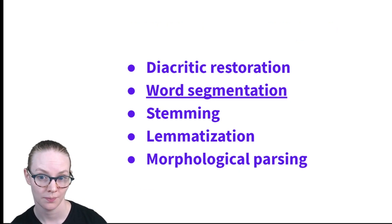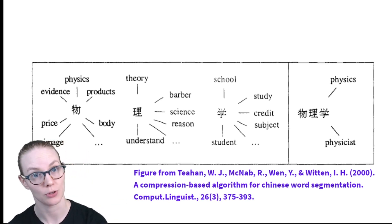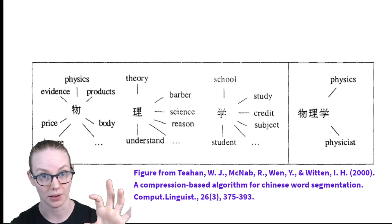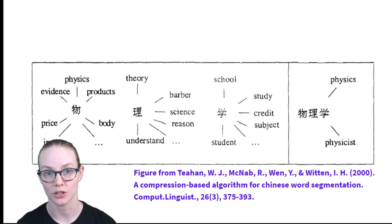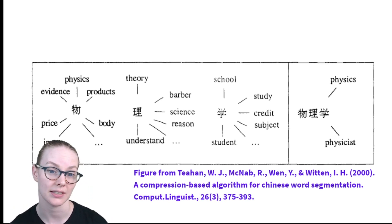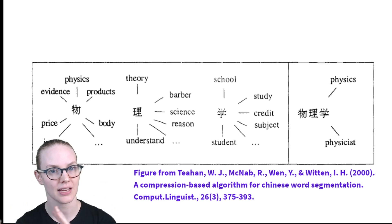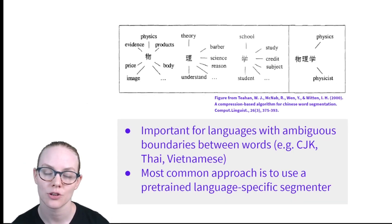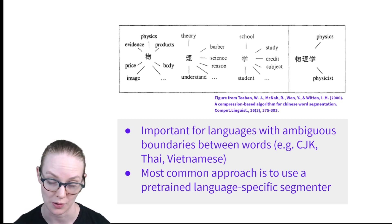Another task is word segmentation. This is really only important for languages where there is no written segmentation between the words. For example, in Chinese, there aren't spaces between different words — they are written as one long text string. Because each character has meaning on its own, it's sometimes ambiguous where the boundary between words should be. We have here a three-character phrase that can mean physics or physicist, but each character on its own also has meaning. So where do you slice the text to have the most meaningful units, and also the units that the author originally intended? This task is only really important for languages where this is ambiguous, particularly languages without white space between words.